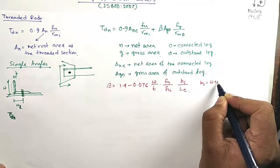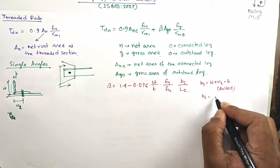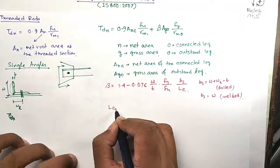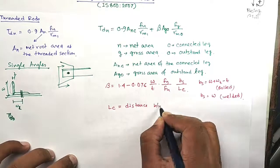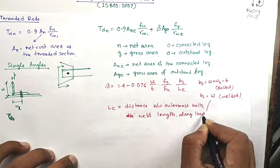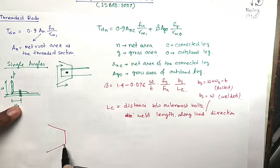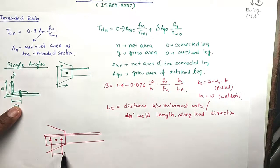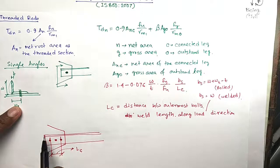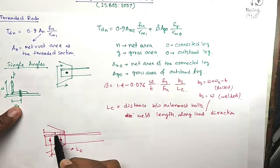Bs is W + Wt - T for a bolted connection. And if it is welded connection, then Bs equals W. LC is equal to the distance between outermost bolts or weld lengths along load direction. This means if the angle is connected like this, then LC will be the distance between outermost bolts, this distance. And if this is welded connection, then if the total weld length is this, then it will be LC.